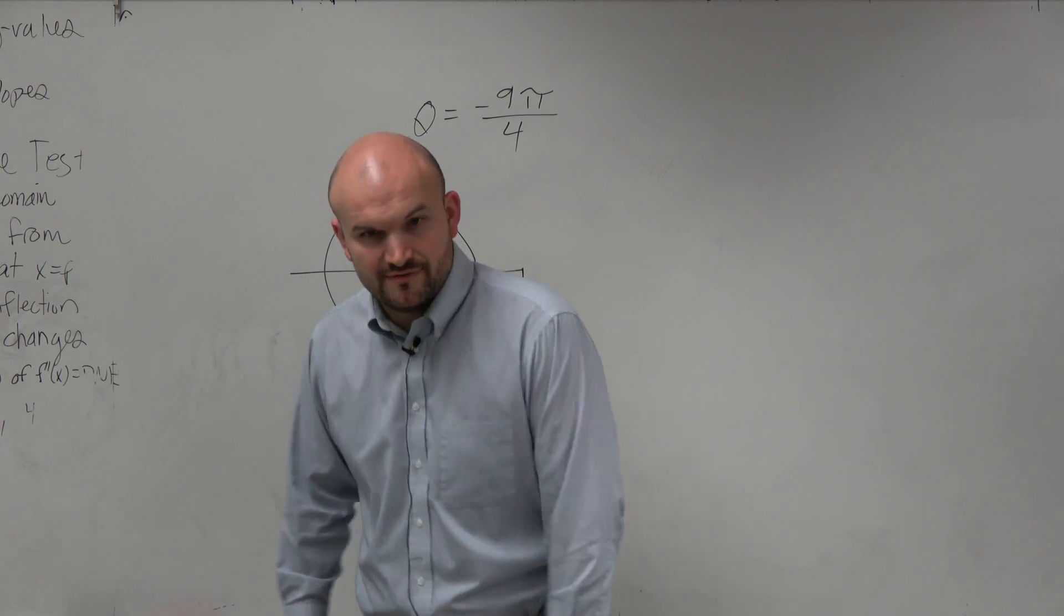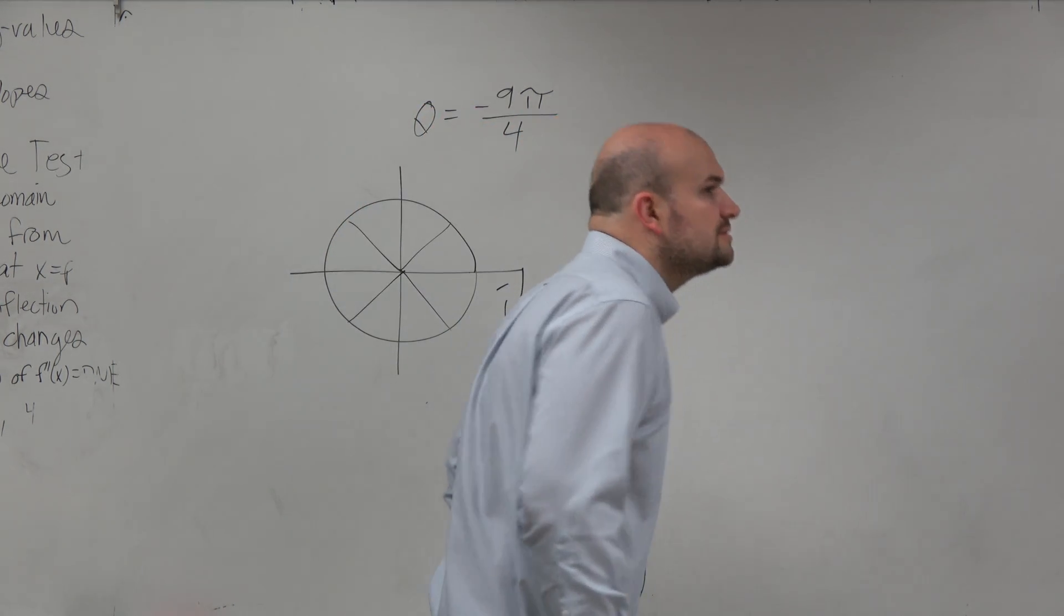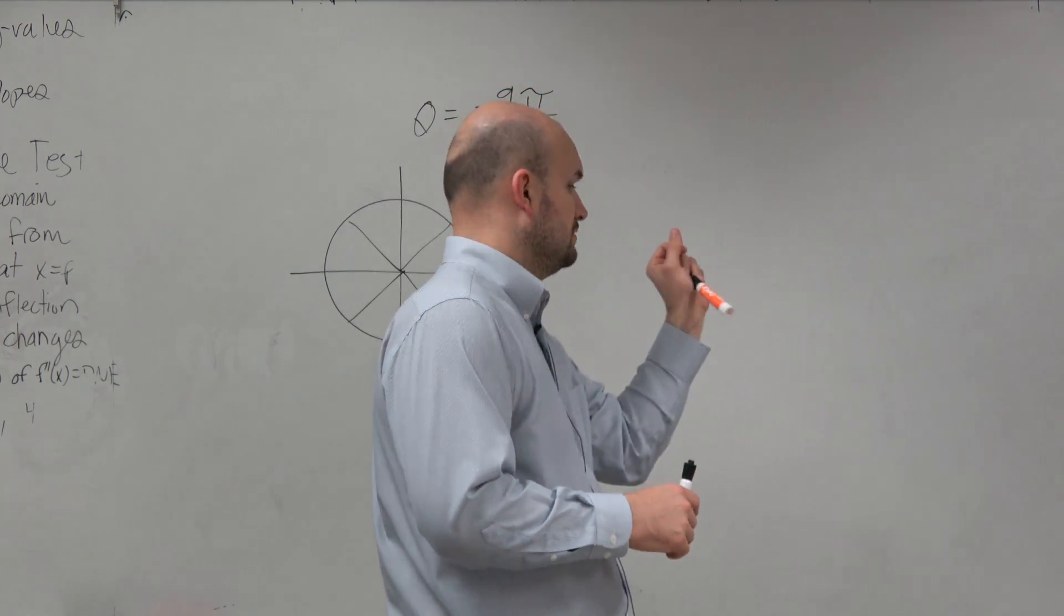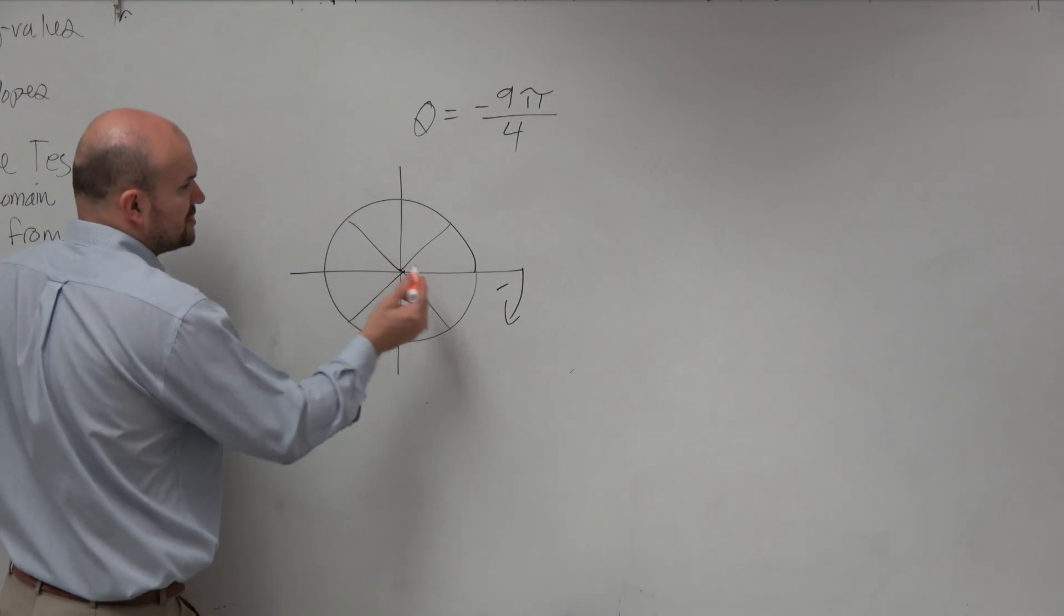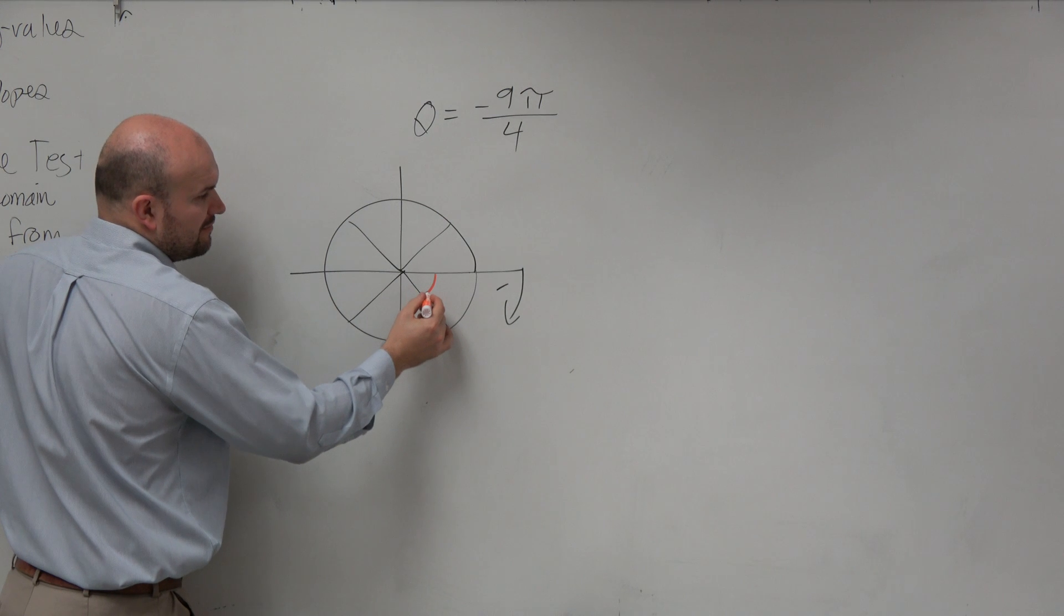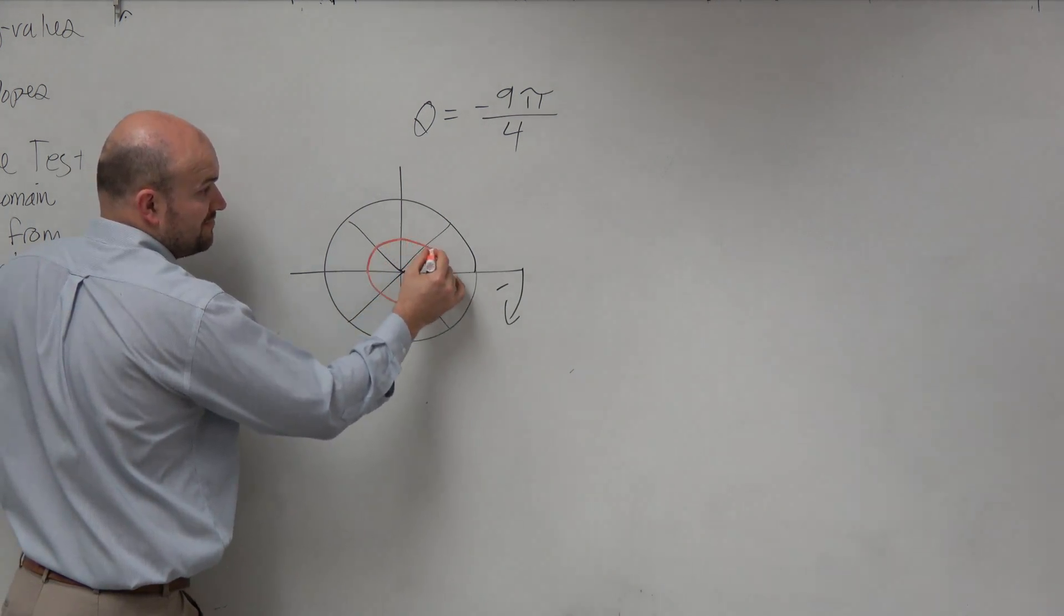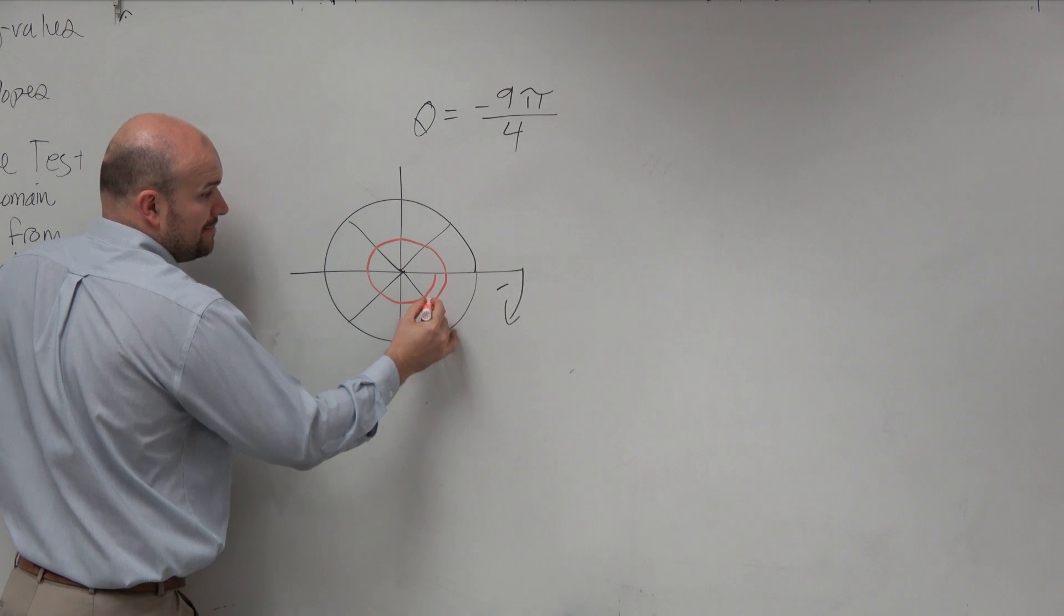Now, watch what happens when I follow this. Do I have another color? Did you throw me the red? Orange, sorry. So if we follow the orange, pi over 4, 2 pi over 4, 3 pi over 4, 4 pi over 4, 5 pi over 4, 6 pi over 4, 7 pi over 4, 8 pi over 4, 9 pi over 4.